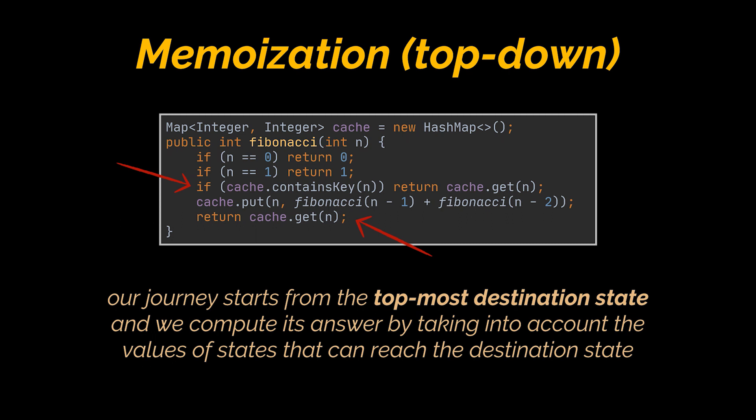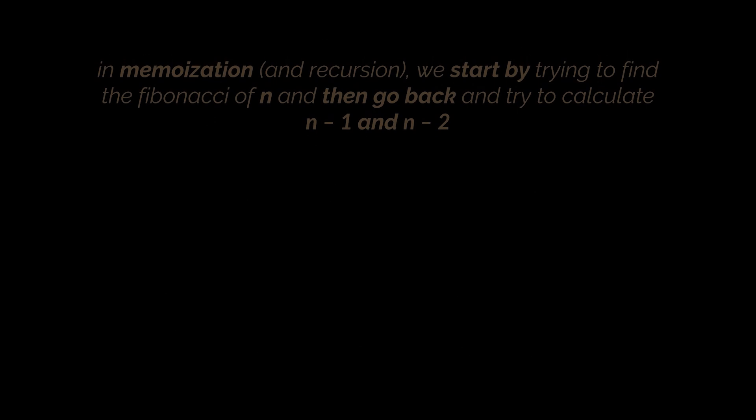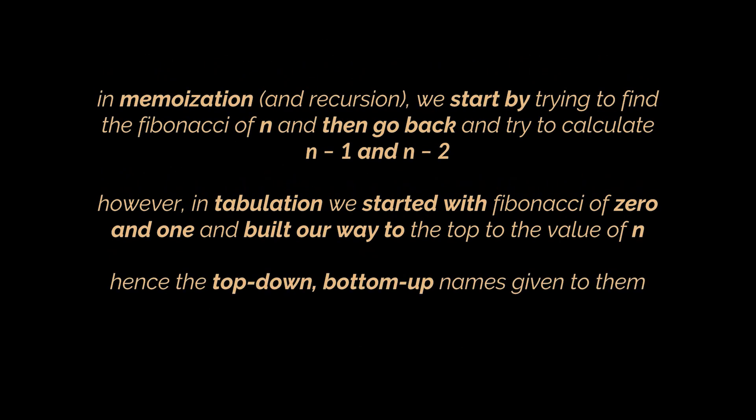To sum up: in memoization we start by finding the Fibonacci of n and then go back to calculate n-minus-1 and n-minus-2. However, in tabulation we start with Fibonacci of 0 and 1 and build our way up to the value of n — hence the bottom-up and top-down names given to them.